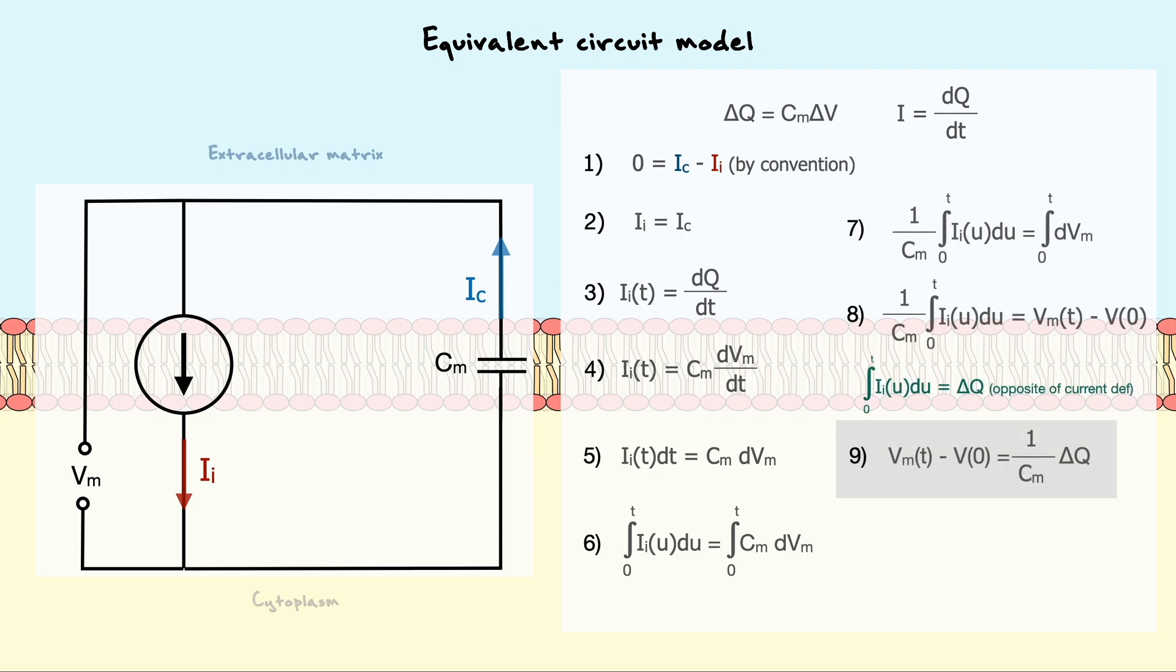To make things simple, we will assume that the current injected is held constant and thus, the change in charge is simply described by the constant current we inject times the amount of time we have injected it for.